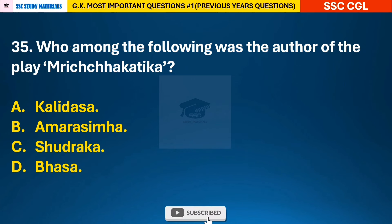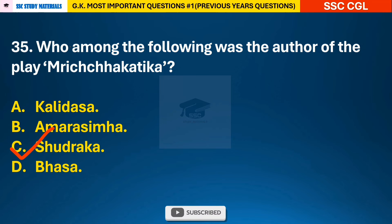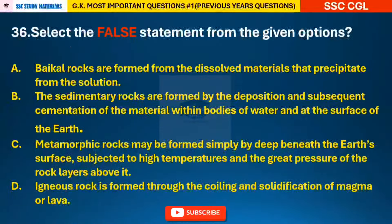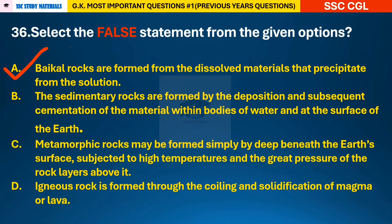Question 35: Who among the following was the author of the play Mricchakatika? — answer C: Shudraka. Question 36: Select the false statement from the given options — answer A: the false statement is 'Bioclastic rocks are formed from dissolved materials that precipitate from the solution.'